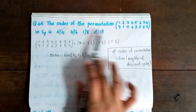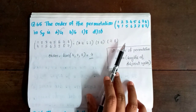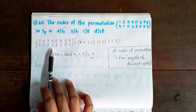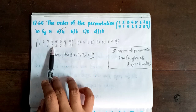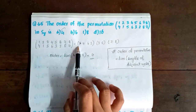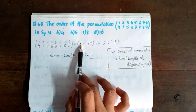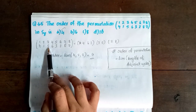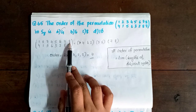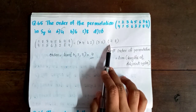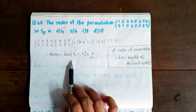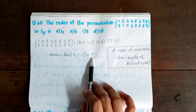Next, question 65: The order of the permutation in S8. The order of a permutation is the LCM of its disjoint cycle lengths. We have: 1 maps to 4, 4 maps to 6, 6 maps to 2, 2 maps to 1 — this is a 4-cycle. Then 3 maps to 5, 5 maps to 3 — a 2-cycle. Then 7 maps to 8, 8 maps to 7 — another 2-cycle. Therefore the order equals LCM of 4, 2, 2 equals 4. So option A is correct.